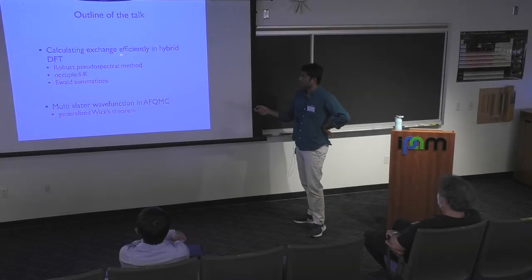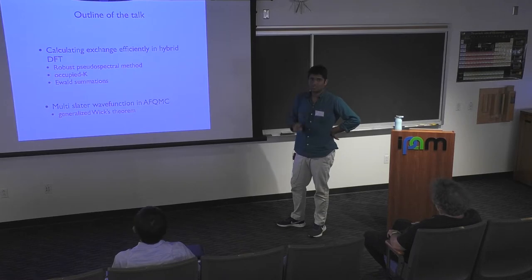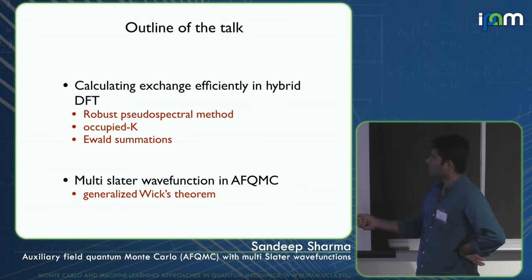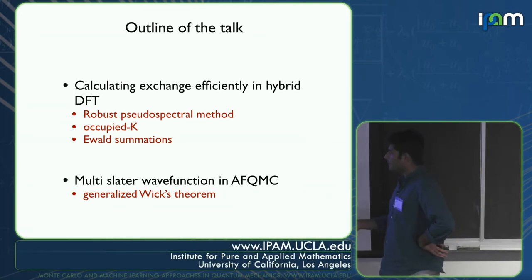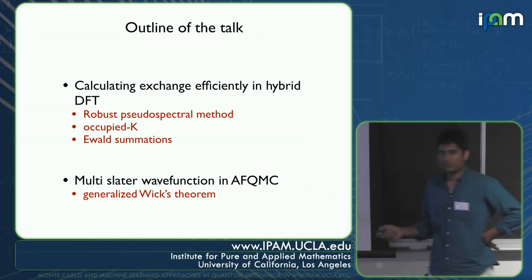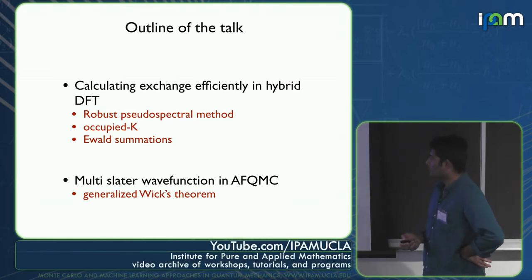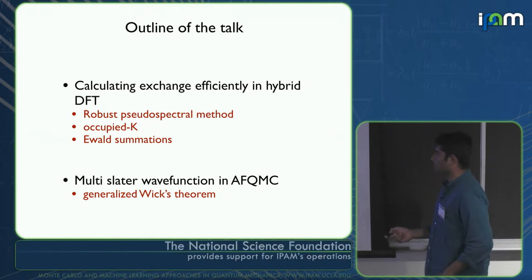In this talk, I'll discuss two things. First, I'll show how you can calculate exchange efficiently in hybrid DFT — there are roughly three different algorithmic steps I'll walk through. Second, I'll tell you how in AFQMC, which you've heard about from other people earlier today, we can use multi-Slater trial states to systematically improve the results.